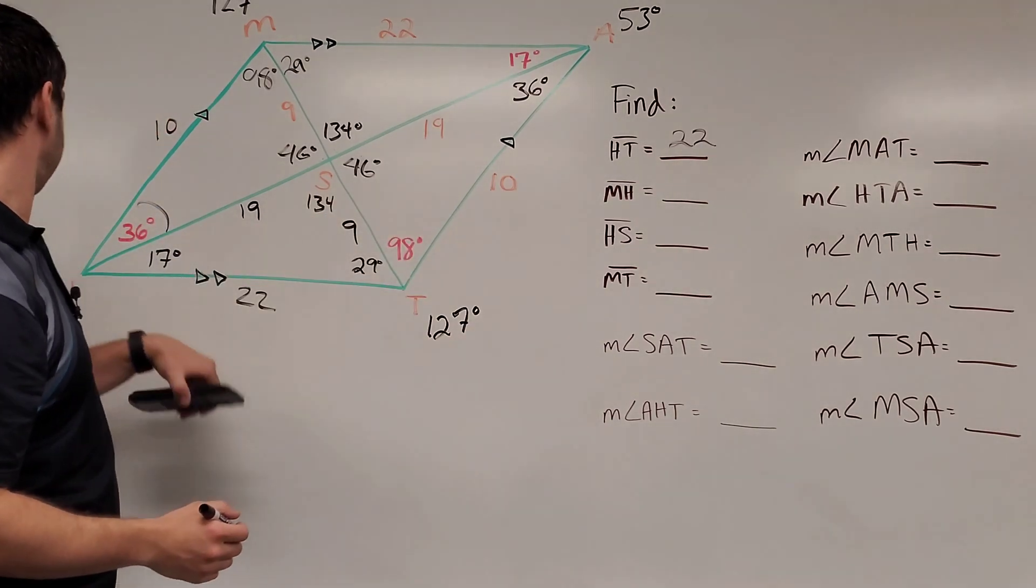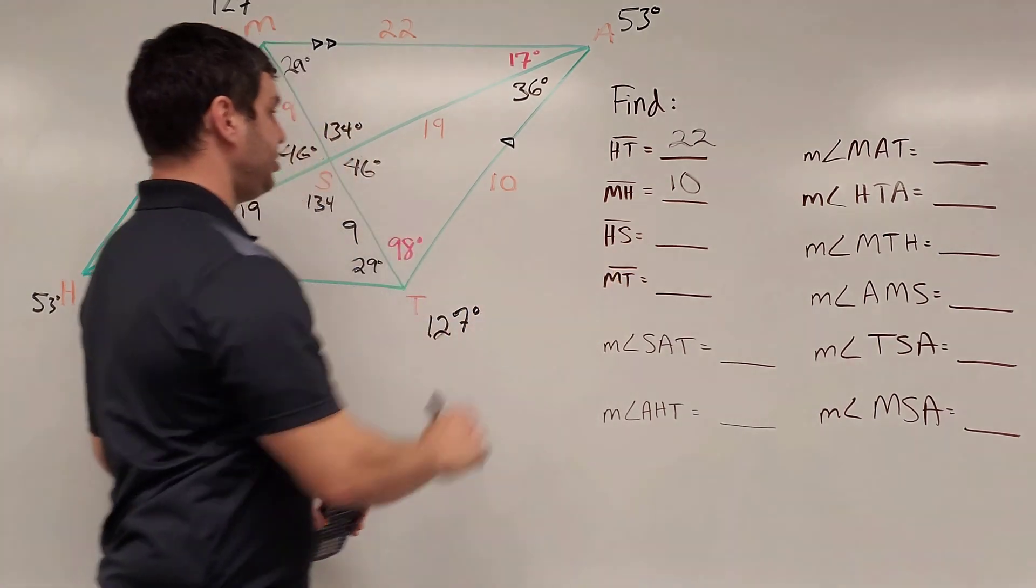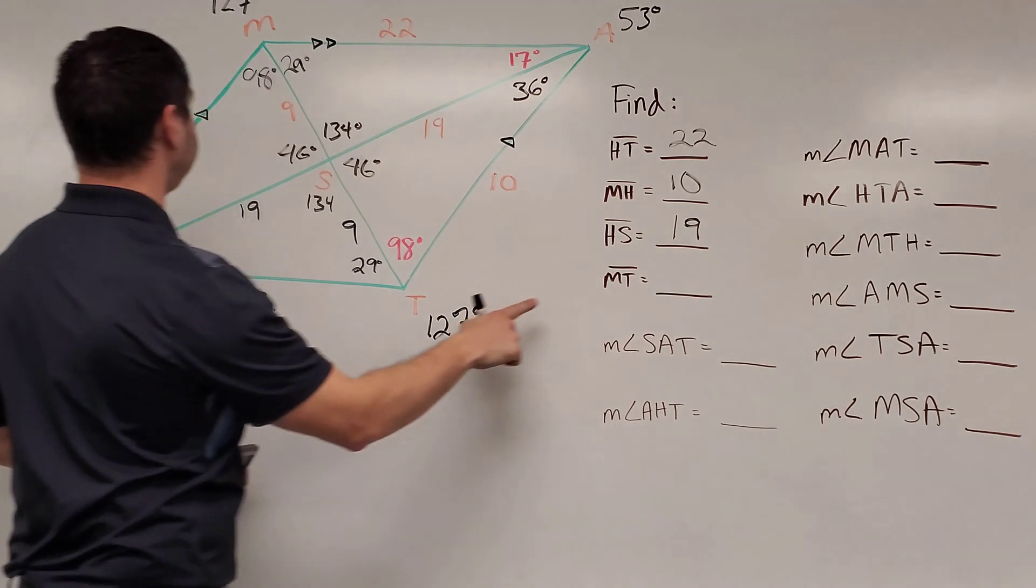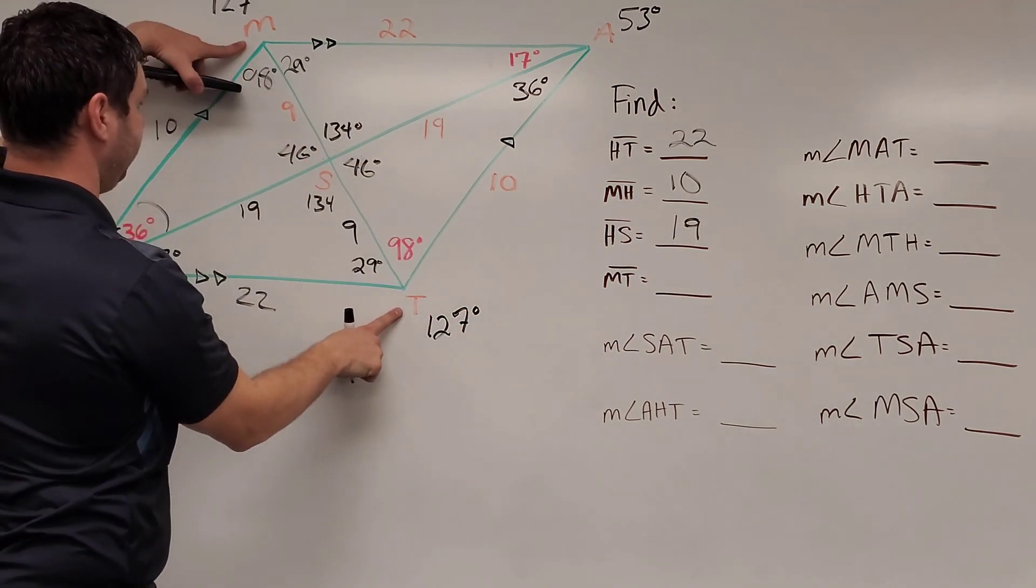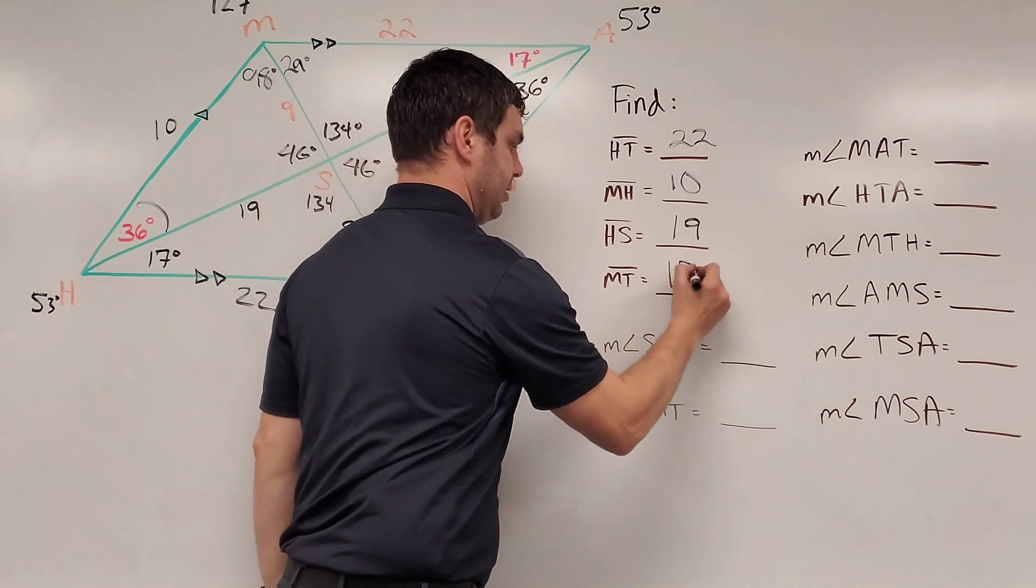Next, it wants MH. Let's see, MH is 10. HS, HS is 19. And MT, MT is this entire length, so the 9 plus the 9 is 18. Okay?